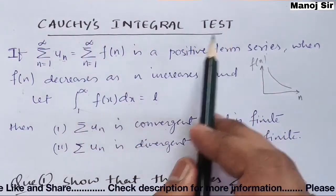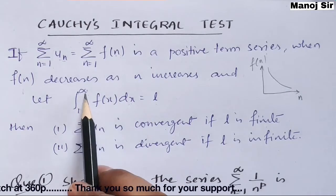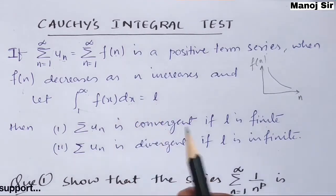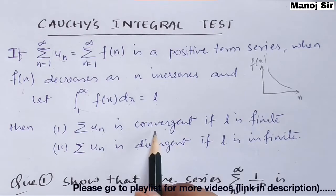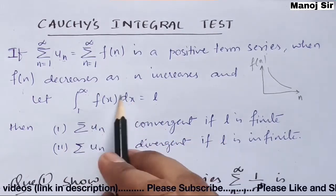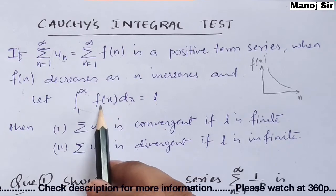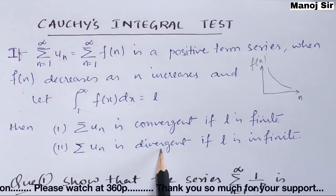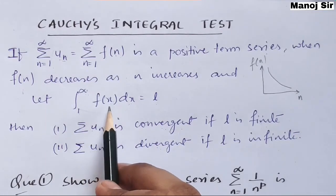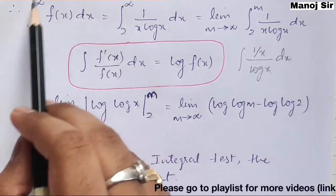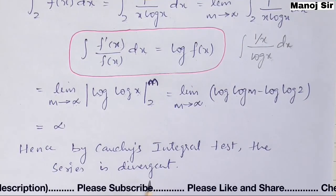Now let us apply Cauchy's Integral Test. According to Cauchy's Integral Test, these two lines are very important: on solving the integration from 1 to infinity of f(x) dx, the value l determines whether the series is convergent or divergent. The series is convergent if the integration is finite, and the series is divergent if the value of the integration is infinite. Since the value of our integration is infinity, by Cauchy's Integral Test, the series is divergent.